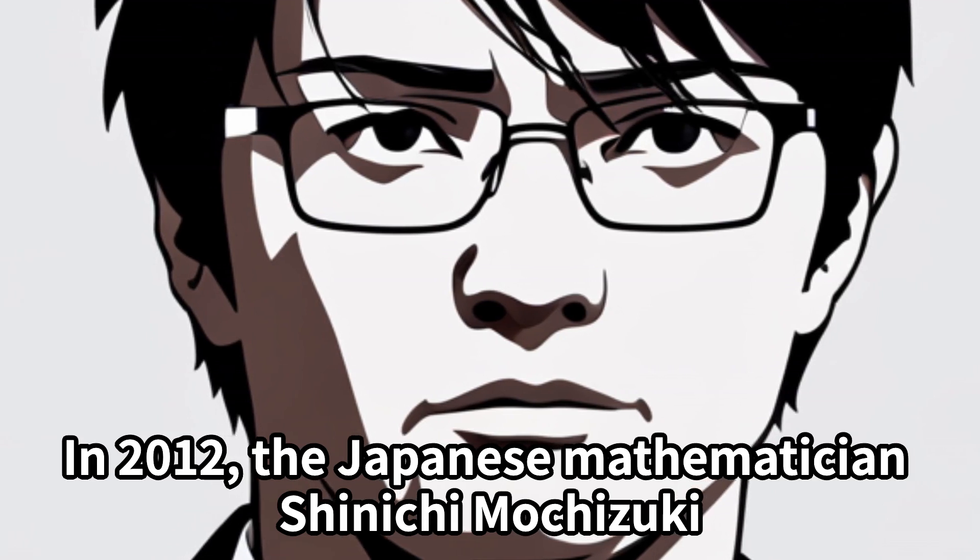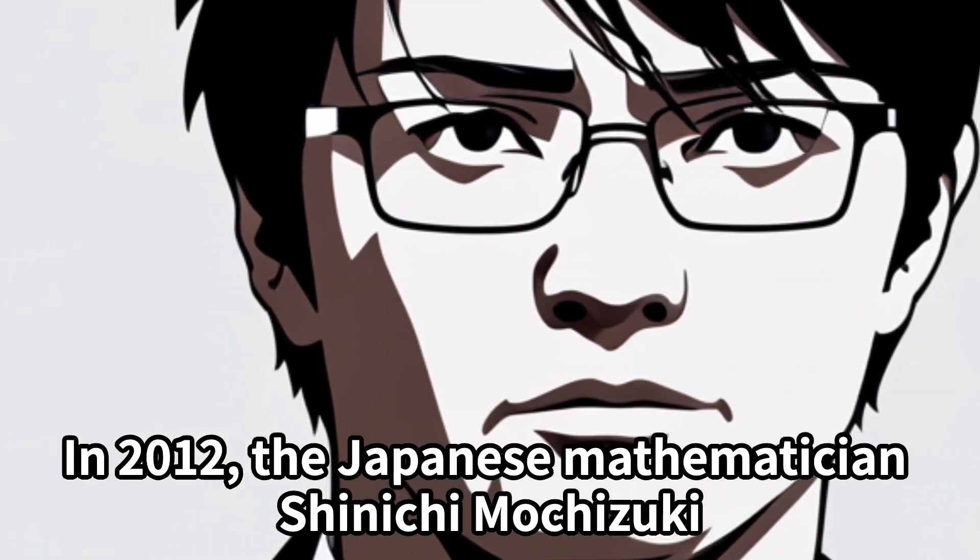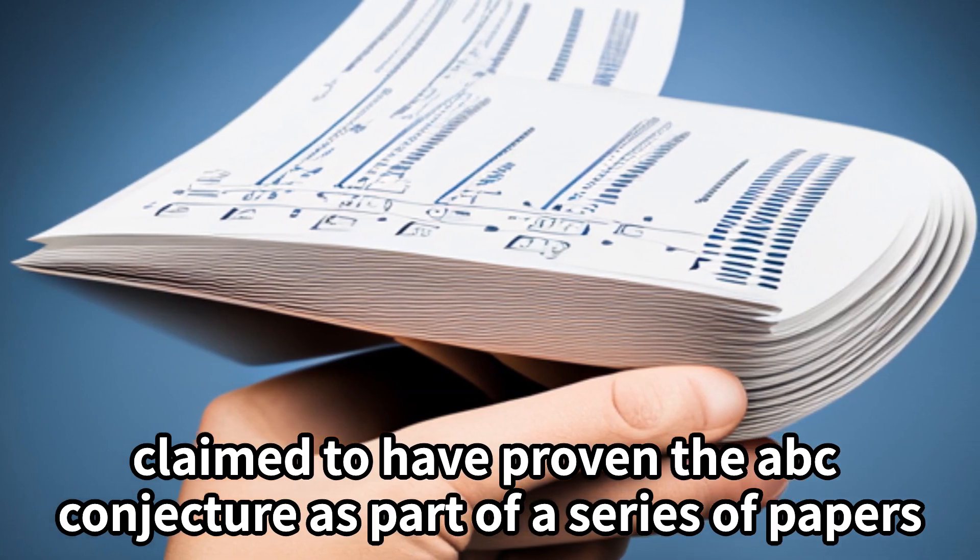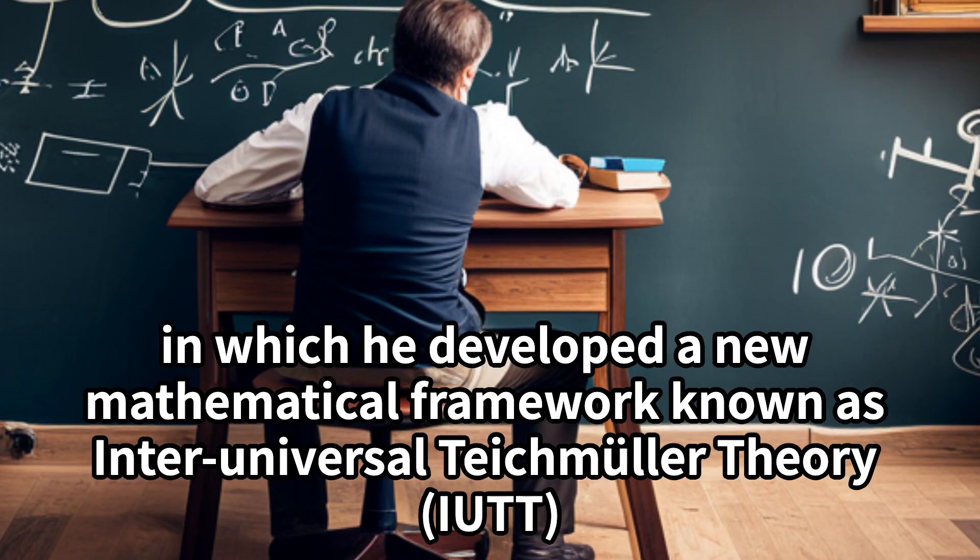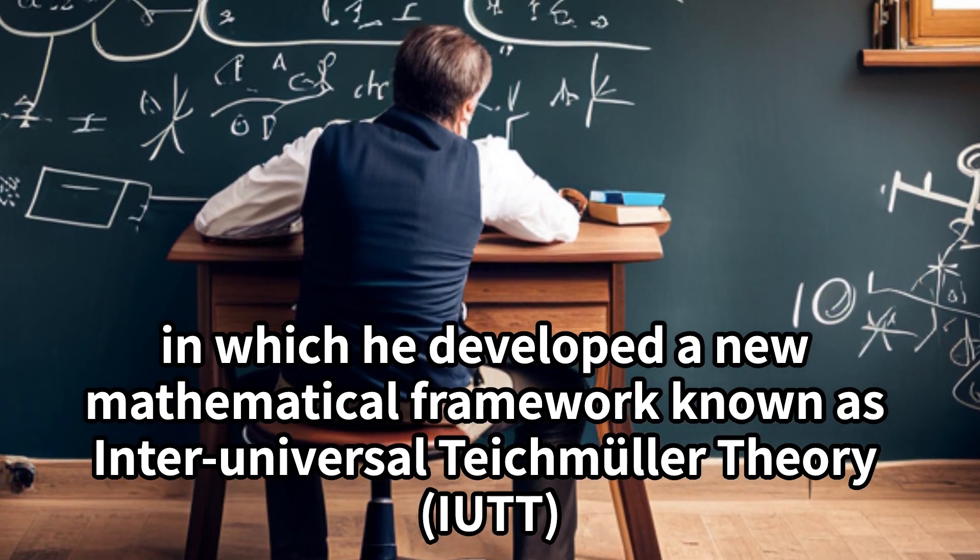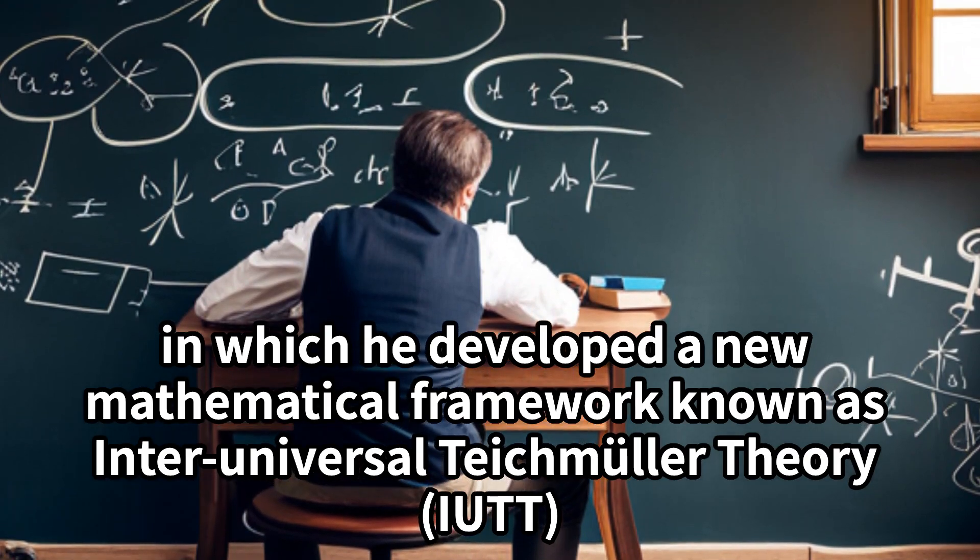In 2012, the Japanese mathematician Shinichi Mochizuki claimed to have proven the ABC conjecture as part of a series of papers in which he developed a new mathematical framework known as Inter-Universal Teichmuller Theory (IUTT).